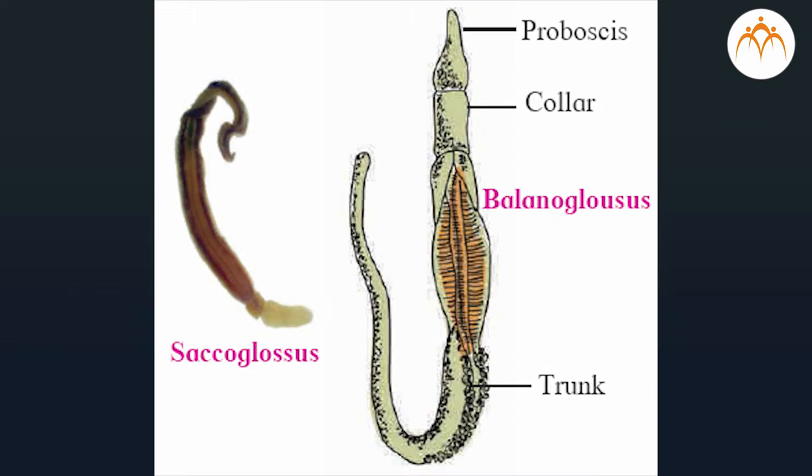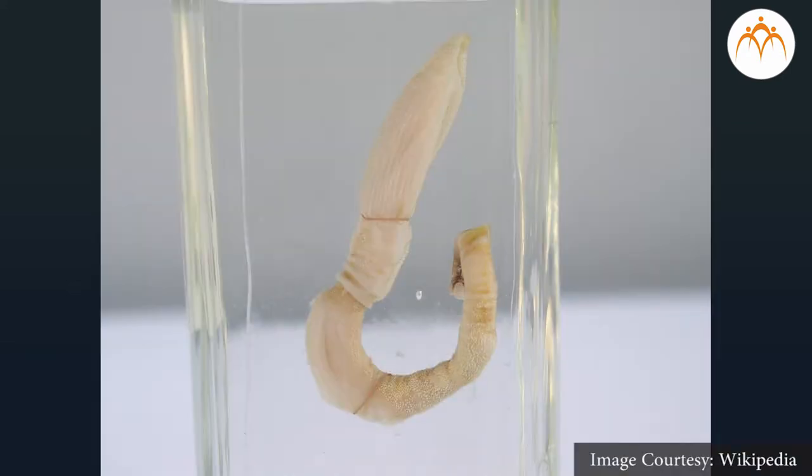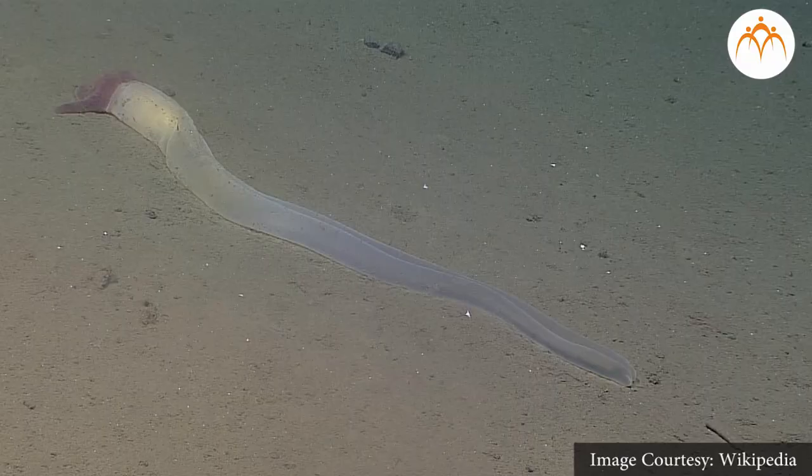They are unisexual or some may be hermaphrodite. Examples: Balanoglossus, Saccoglossus. Note: from the viewpoint of evolution, Balanoglossus is considered a connecting link between non-chordates and chordates. This animal shows the characters of both groups.